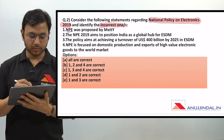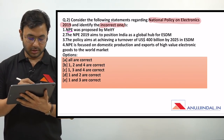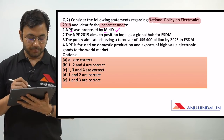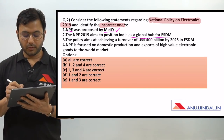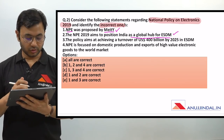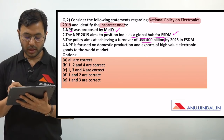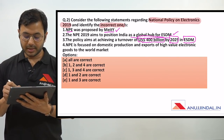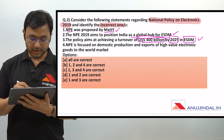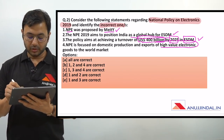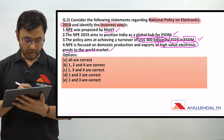NPE - National Policy on Electronics - was proposed by MeitY, which is the Ministry of Electronics and Information Technology. That is correct. NPE 2019 aims to position India as a global hub for ESDM - that is also correct. The policy aims at achieving a turnover of $400 billion by 2025 in ESDM - that is also correct. NPE is focused on domestic production and exports of high value electronic goods to the world market - that in fact is also correct.